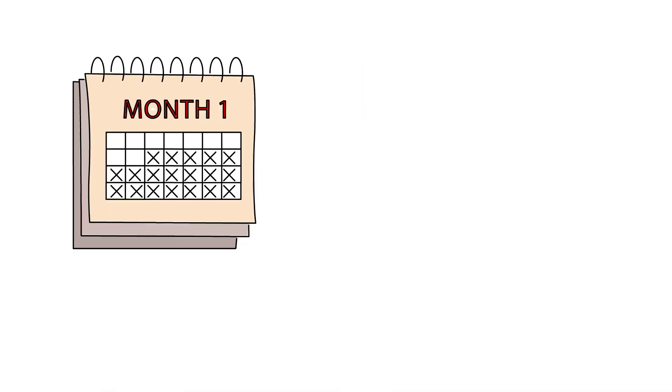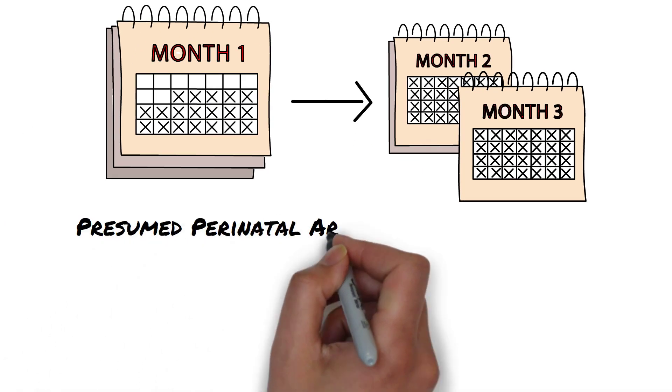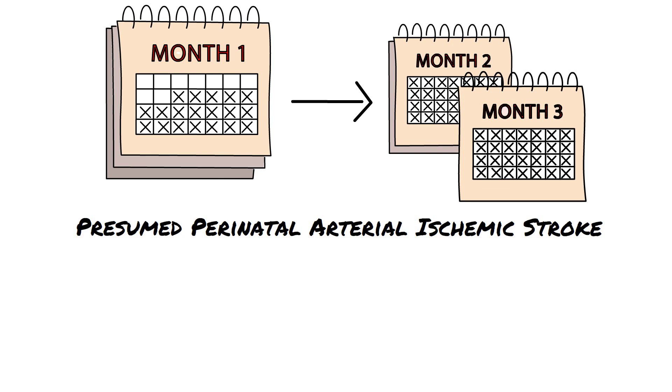Sometimes the child will only show symptoms several months after birth, such as an early hand preference. We call this a presumed perinatal arterial ischemic stroke or PPAIS for short.